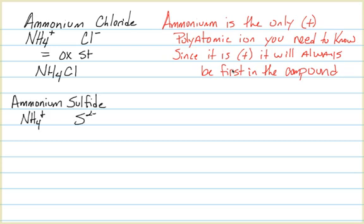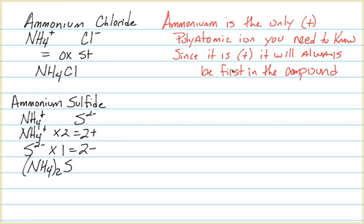An example where we do need parentheses around ammonium is ammonium sulfide. Ammonium has a positive-one oxidation state and sulfide has a two-negative. We need two ammoniums and one sulfide, so the formula is (NH₄)₂S.